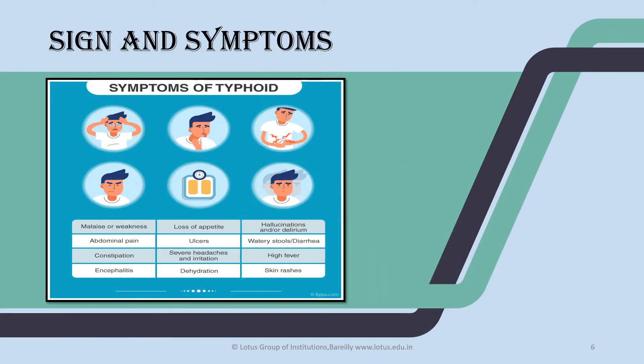Signs and symptoms: first, abdominal pain because it invades our intestine, then constipation, encephalitis, skin rashes, high fever. Most common symptoms are abdominal pain, watery stools, diarrhea. In severe cases, hallucinations, delirium, dehydration, irritation. These are common symptoms of typhoid fever.